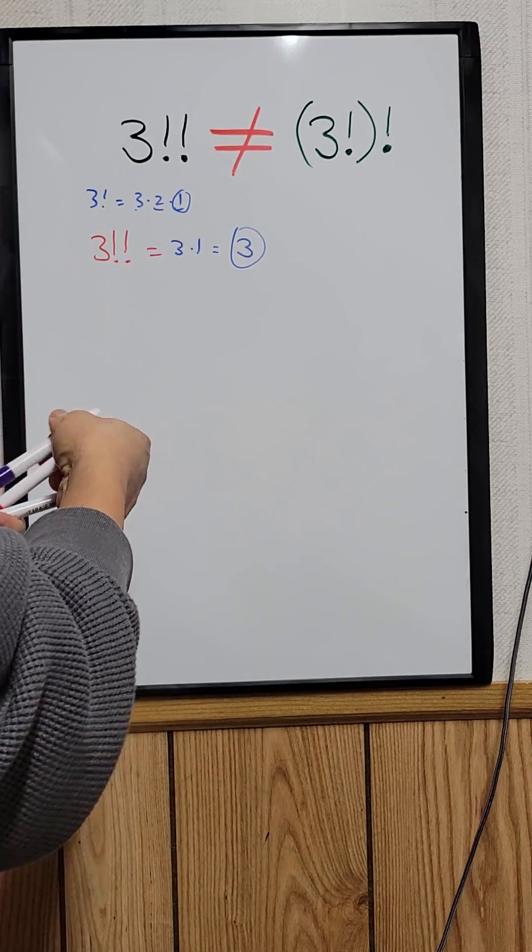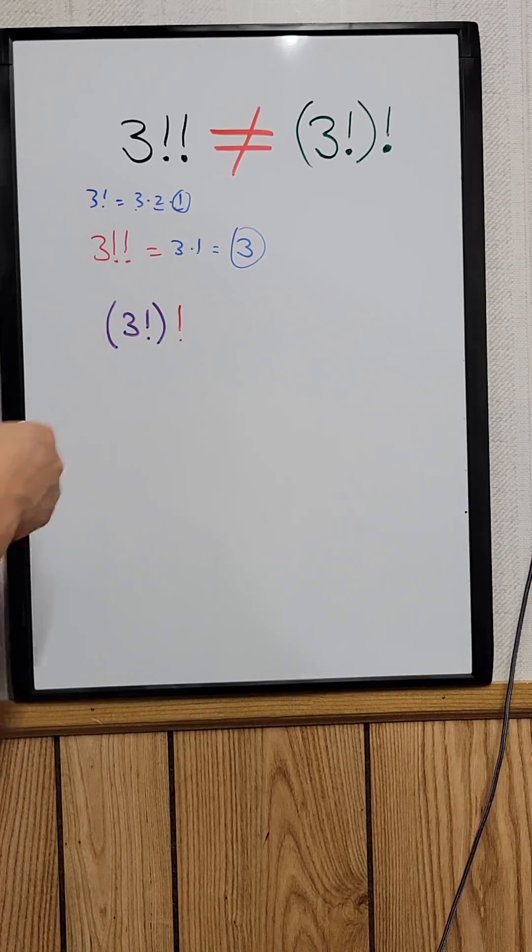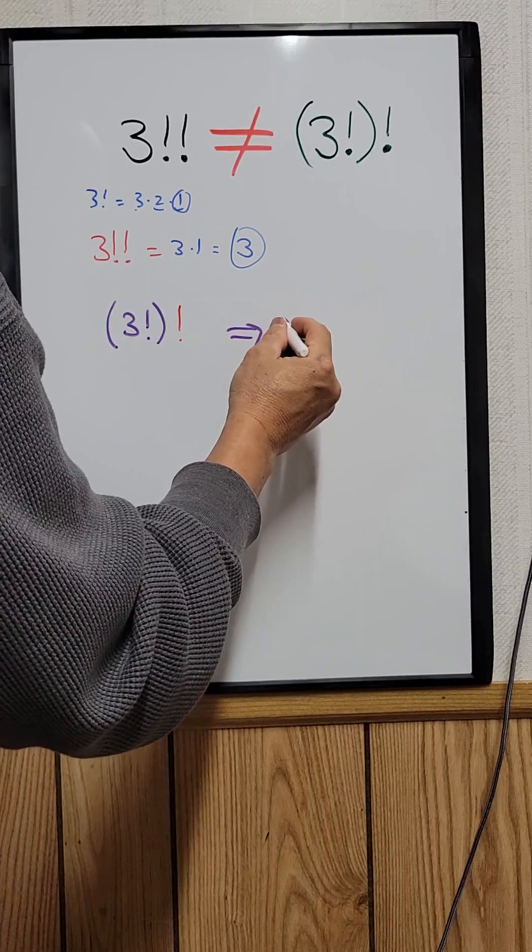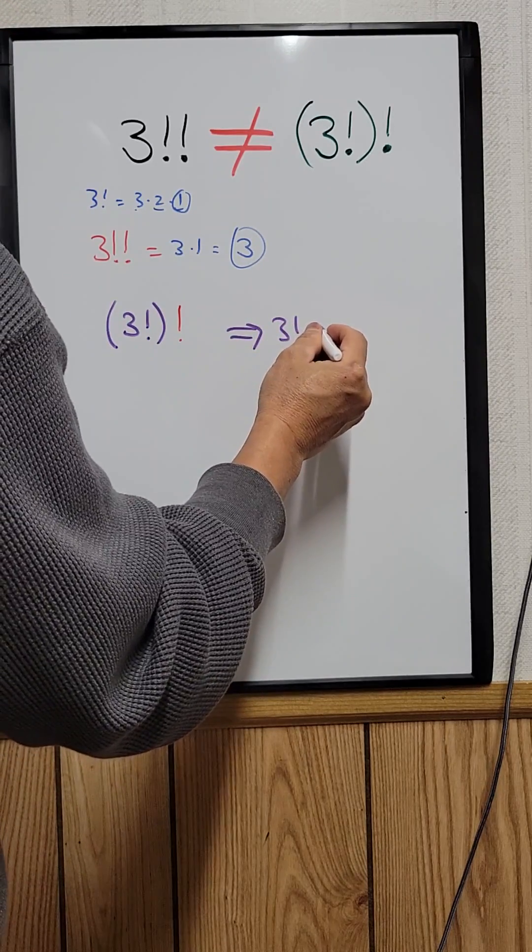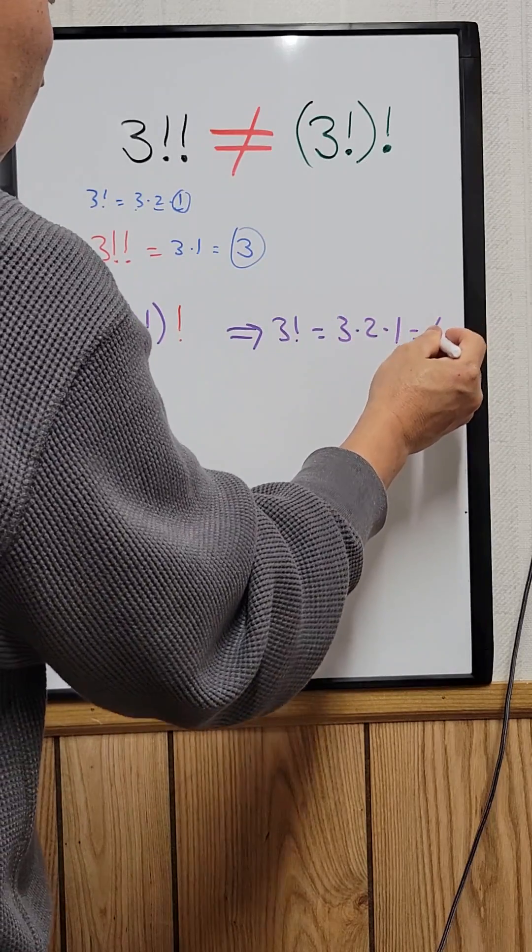And then let's find this one right here. So first we need to solve the one inside the bracket, the 3 factorial. You already know that 3 factorial equals 3 times 2 times 1, which is equal to 6.